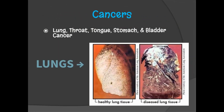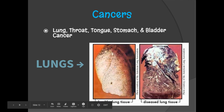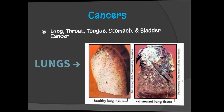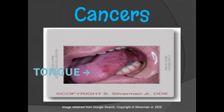The cancers that researchers have found linked to tobacco are lung cancer, throat cancer, tongue cancer, stomach cancer, and bladder cancer. That doesn't mean there are no other cancers tobacco can increase the likelihood of, but these are the ones with the strongest studies. You can see on the left a healthy lung tissue and on the right a very damaged, diseased lung tissue. There's also an image here of cancer of the tongue — not healthy, and not what a tongue should look like. These are some of the things you would be subjecting yourself to if you use tobacco products.